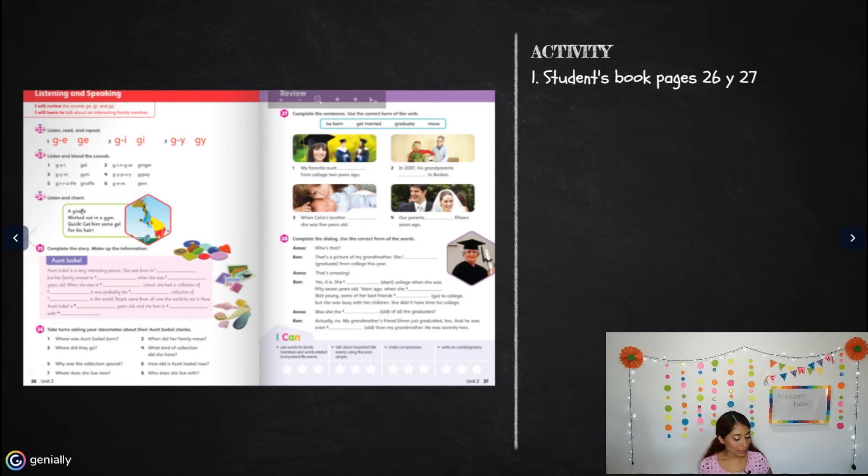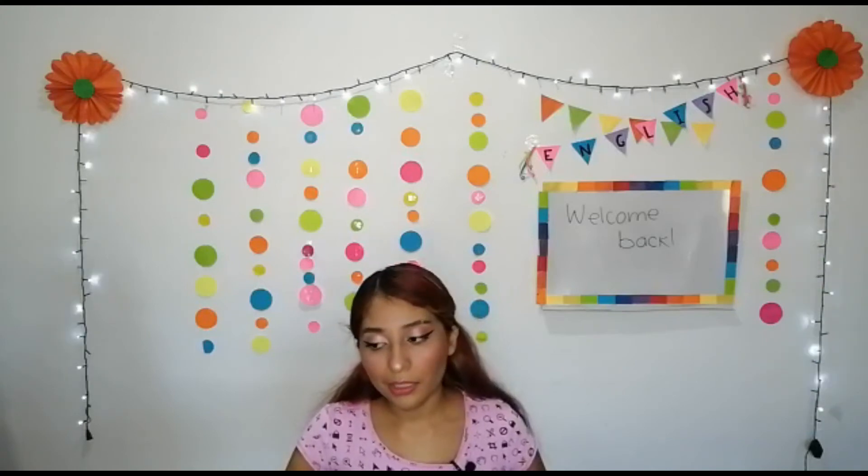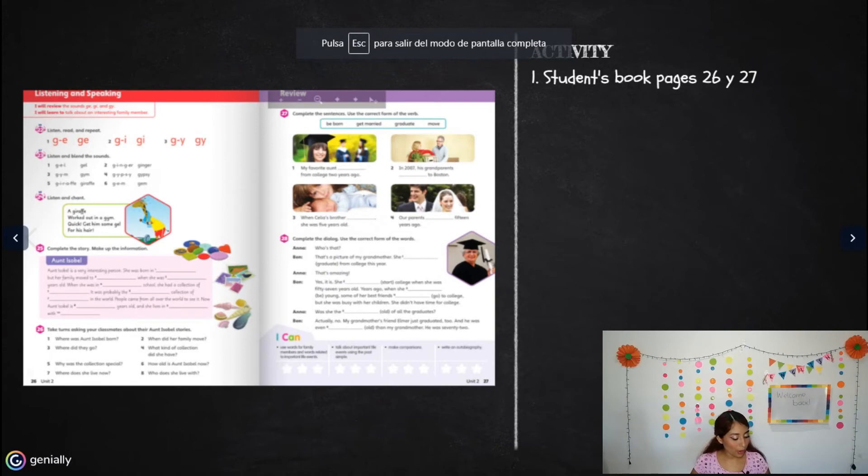Now activity 26, take turns with your classmates about their own Isabel story. This activity is up to you. You're not going to do it with a classmate because of course you don't have your classmates by your side, but you're going to answer it with the information that you wrote. You're going to answer the questions. Number one: where was Ann Elie Isabel born? You're going to complete with the information that you wrote. Number two: where did her family move? Number three: where did they go? Four: what kind of collection did Ann Elie Isabel have? Number five: why was the collection special? Number six: how old is Ann Elie Isabel now? Seven: where does she live now and who does she live with?